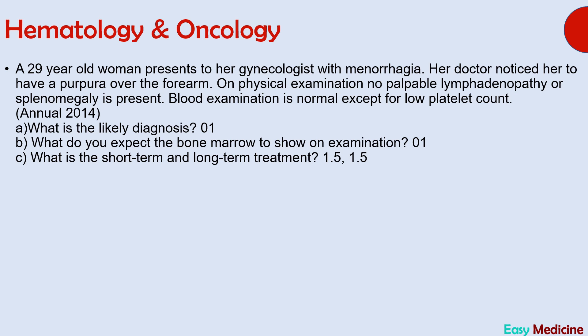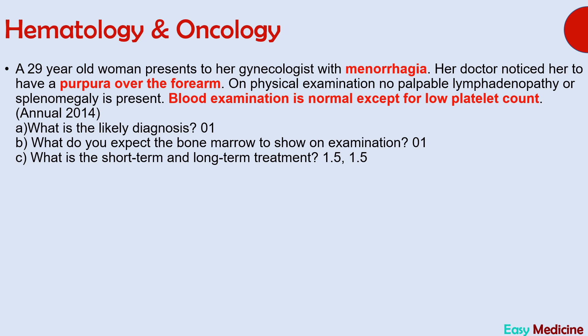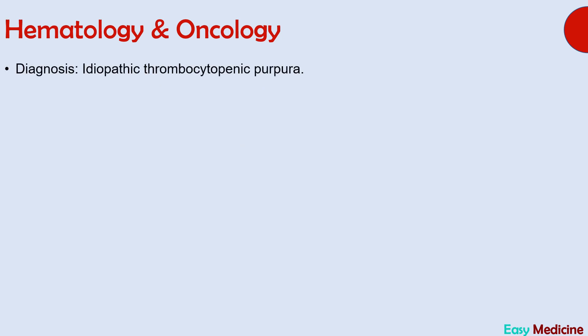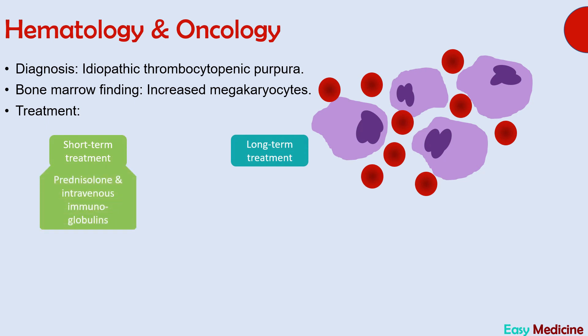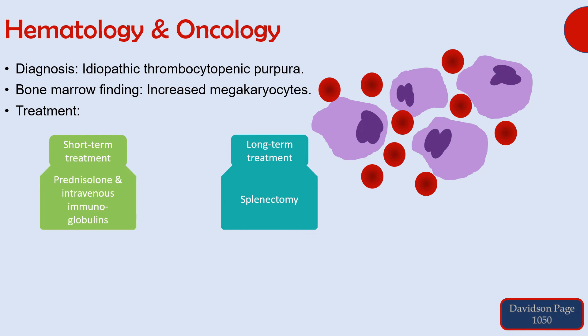The final diagnosis is idiopathic thrombocytopenic purpura. Important diagnostic points are menorrhagia, purpura over the forearms, and blood examination revealing normal counts except for low platelets. Two important findings are normal blood examination except for low platelets and increased megakaryocytes on bone marrow examination. Short-term treatment involves administration of prednisolone and intravenous immunoglobulins; long-term treatment is splenectomy. This concludes the discussion on hematology and oncology section of Medicine Paper One.